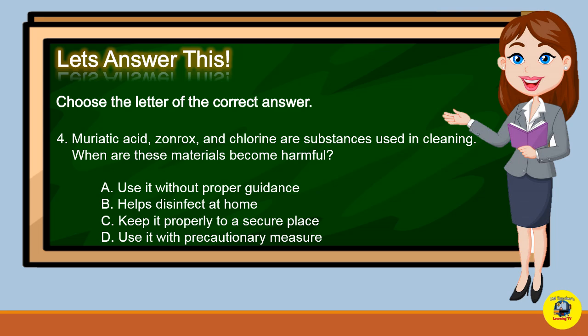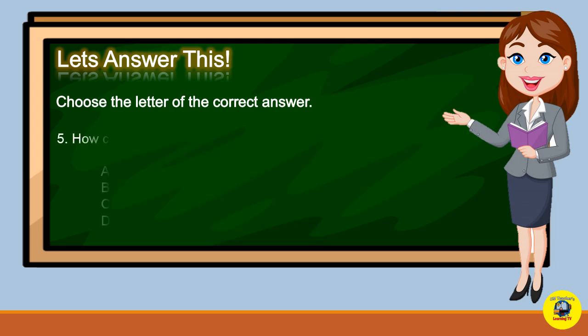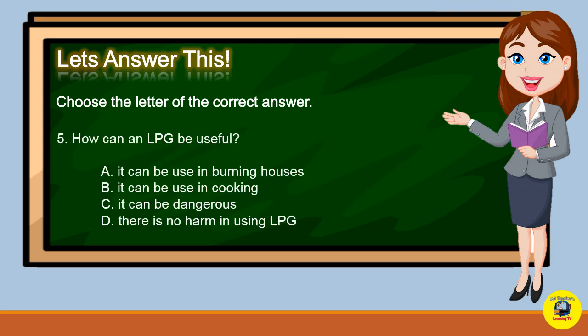Number 4: Muriatic acid, Zonrex, and chlorine are substances used in cleaning. When do these materials become harmful? A. Use them without proper guidance. B. Helps disinfect at home. C. Keep them properly in a secure place. Or D. Use them with precautionary measures. What is your answer?